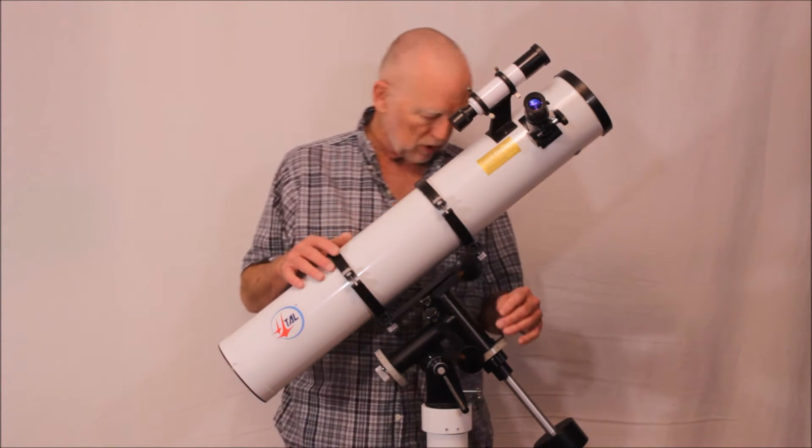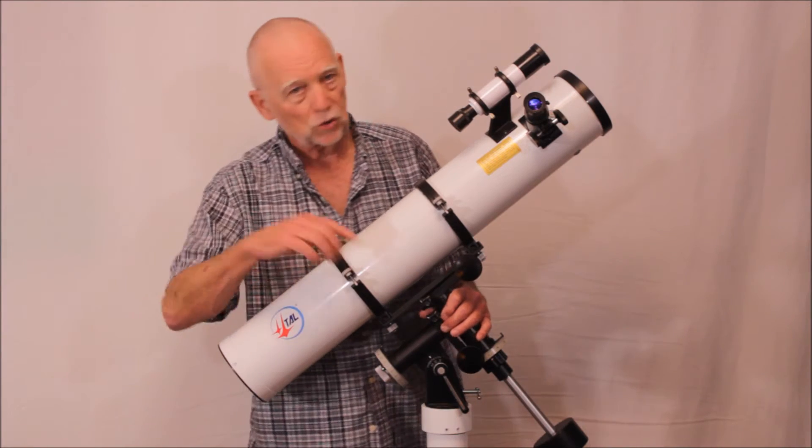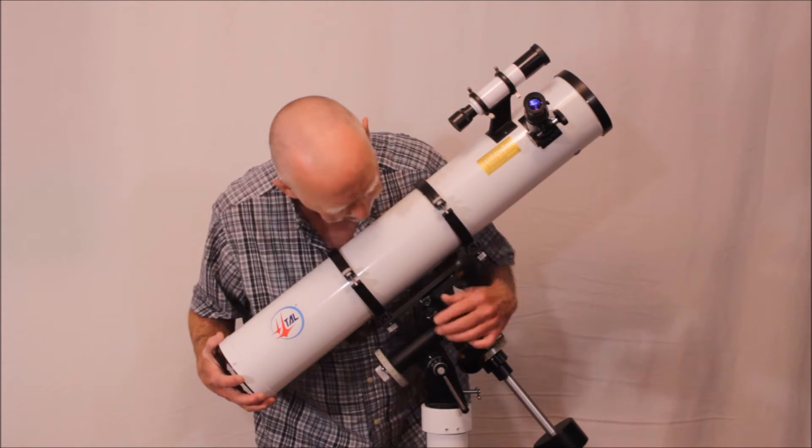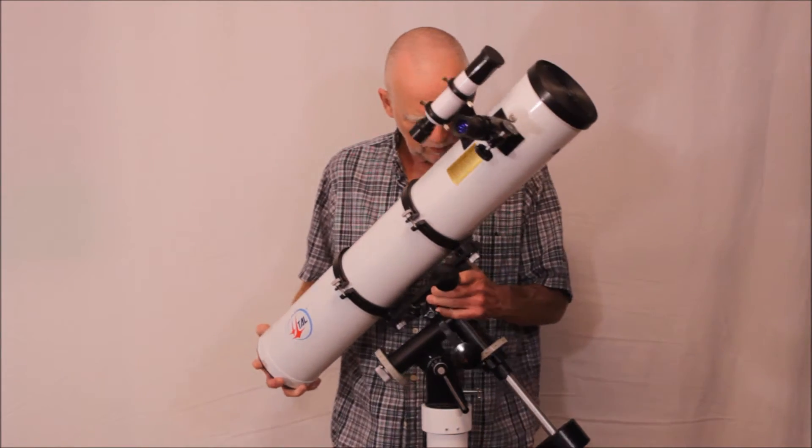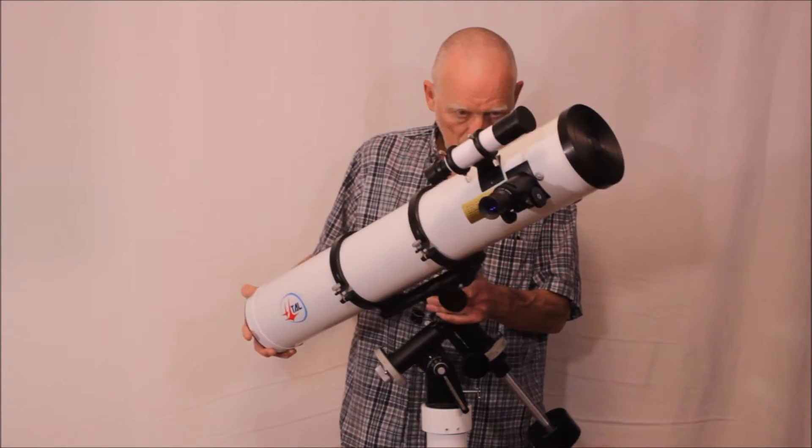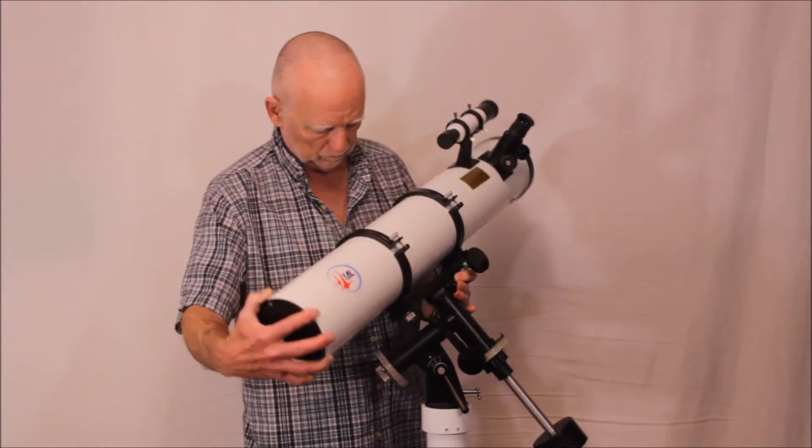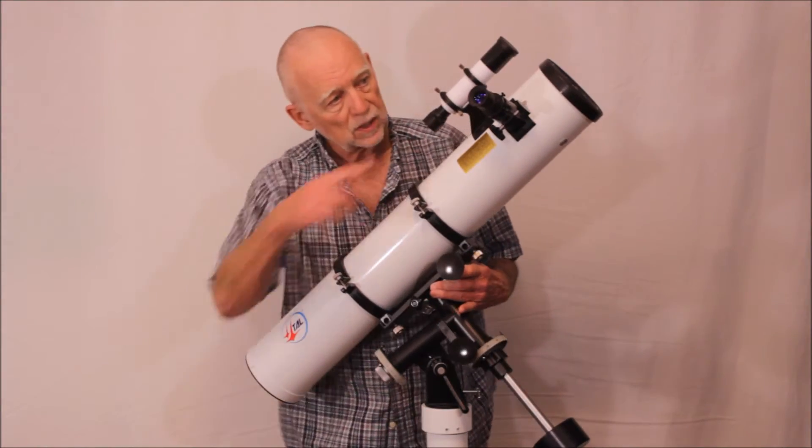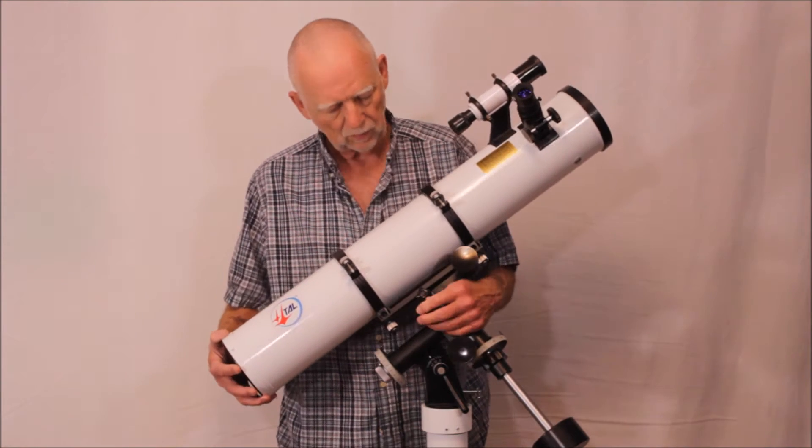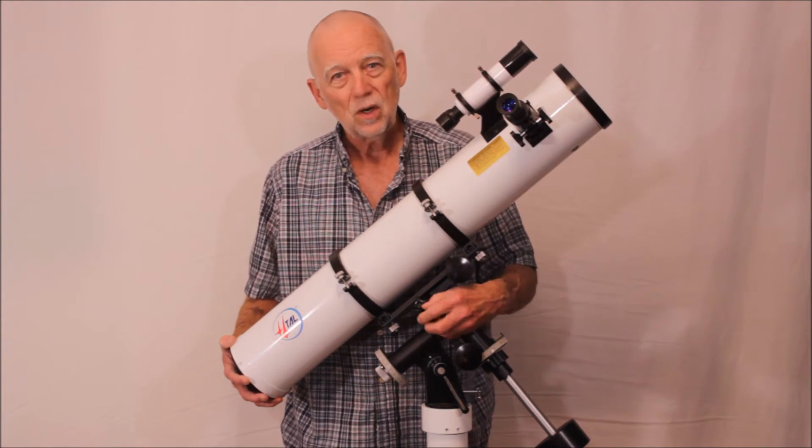The mount has some nice features. It's got slow motion right ascension and declination. I'll show you close-ups of all that. It's got locks right here so you can move it around. Really nice little telescope. It's got a nice set of eyepieces, barlow, the whole bit, and some other fun interesting features I'll show you.